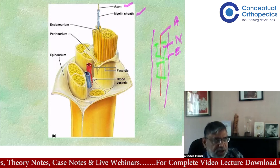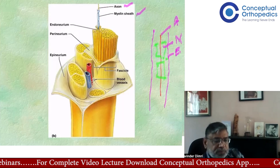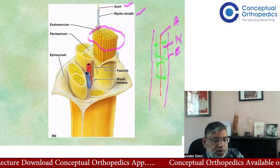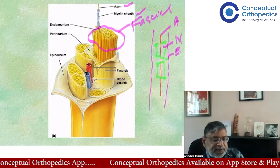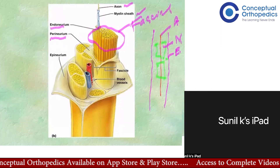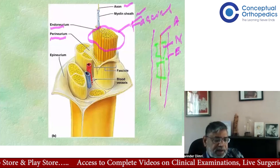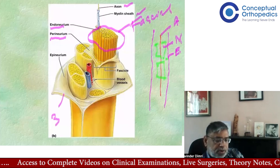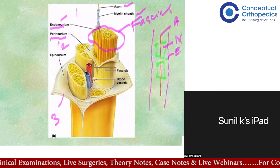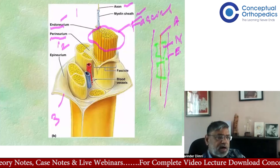There are three connective tissues in the nerve to remember: endoneurium, perineurium, and epineurium. Each axon with its myelin and endoneurium is grouped into a bundle called a fascicle. The fascicle is surrounded by perineurium. Multiple fascicles are then held together by the outermost connective tissue called epineurium.